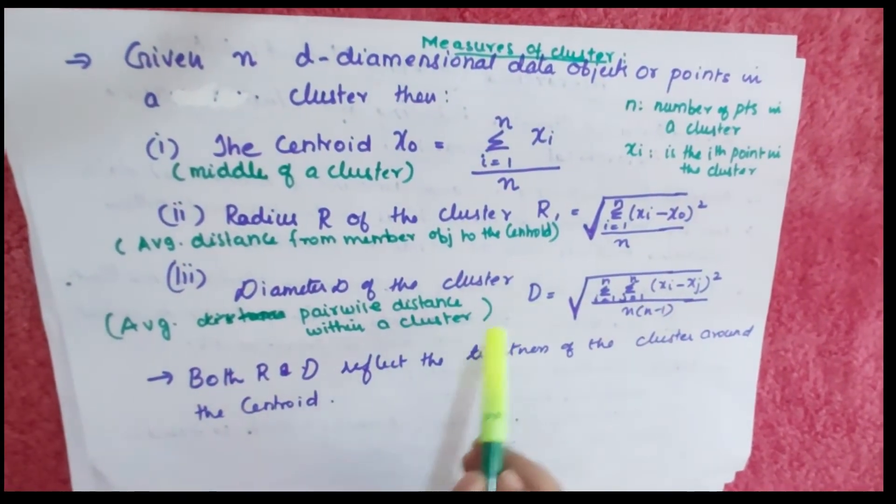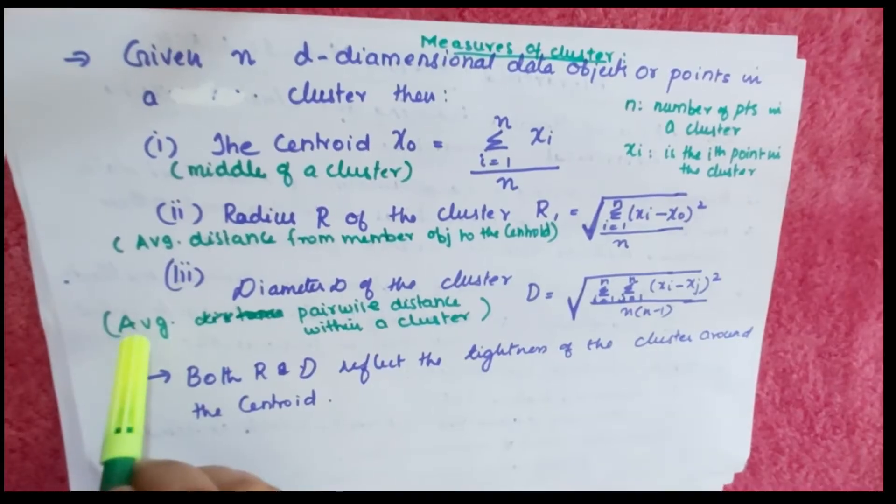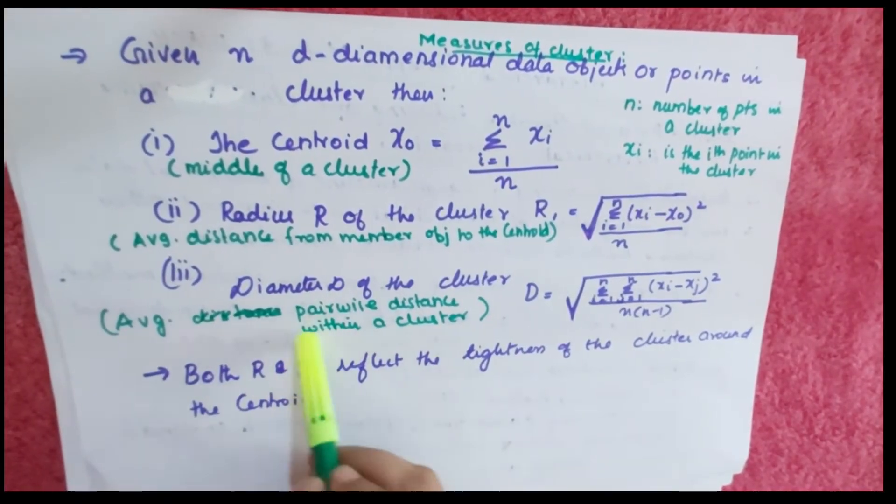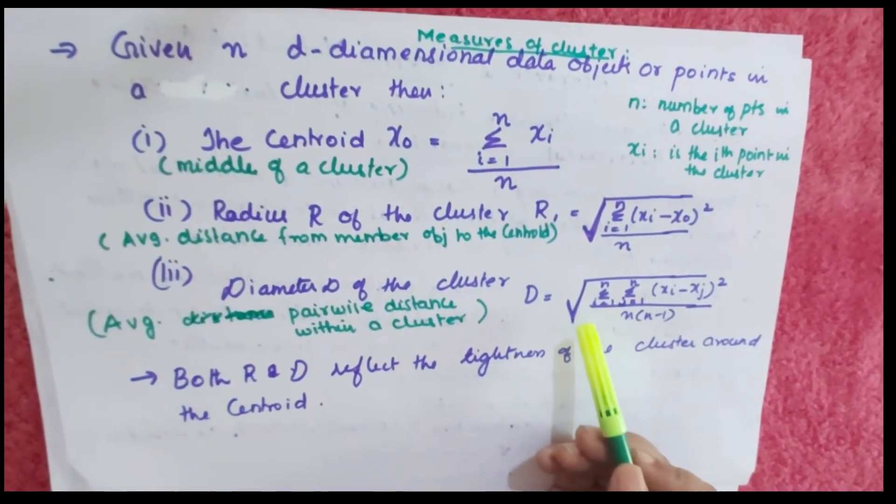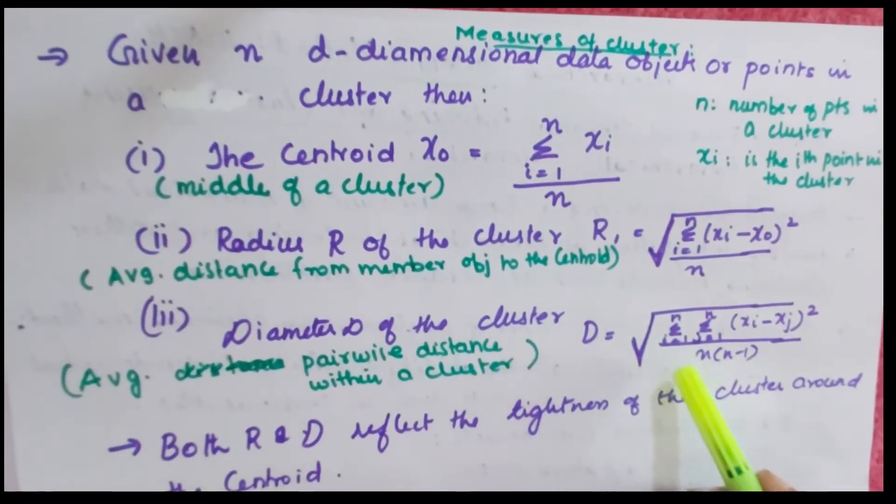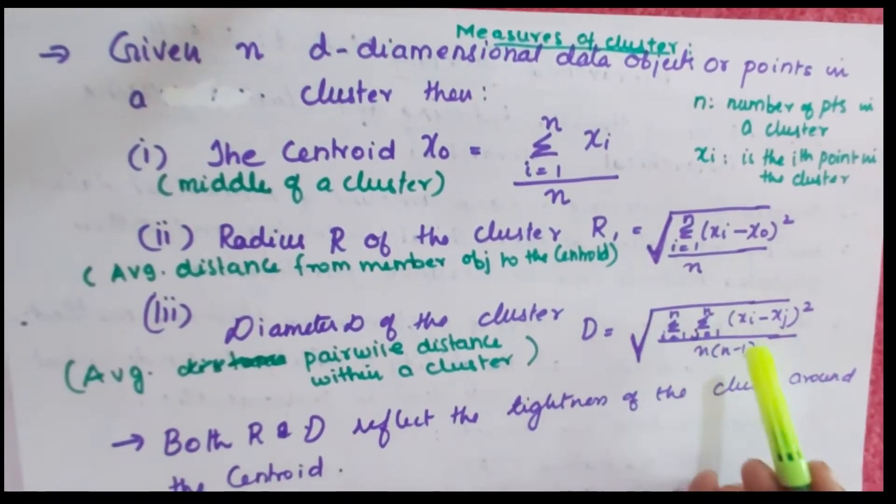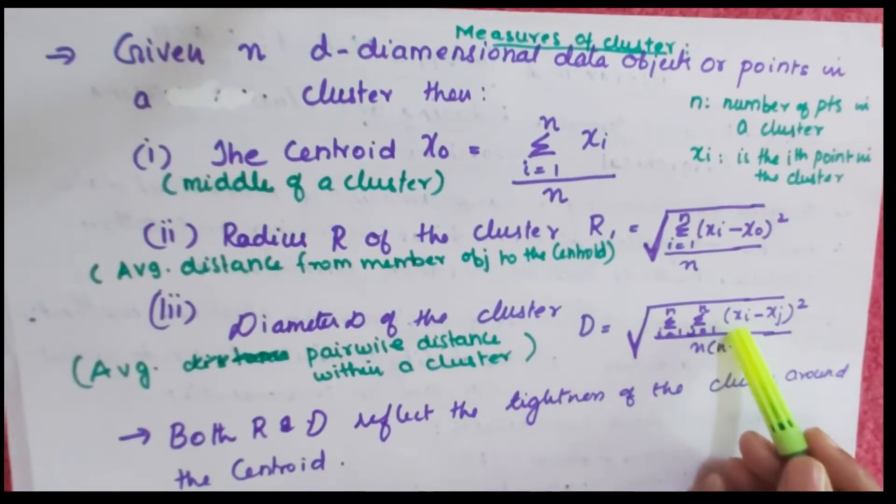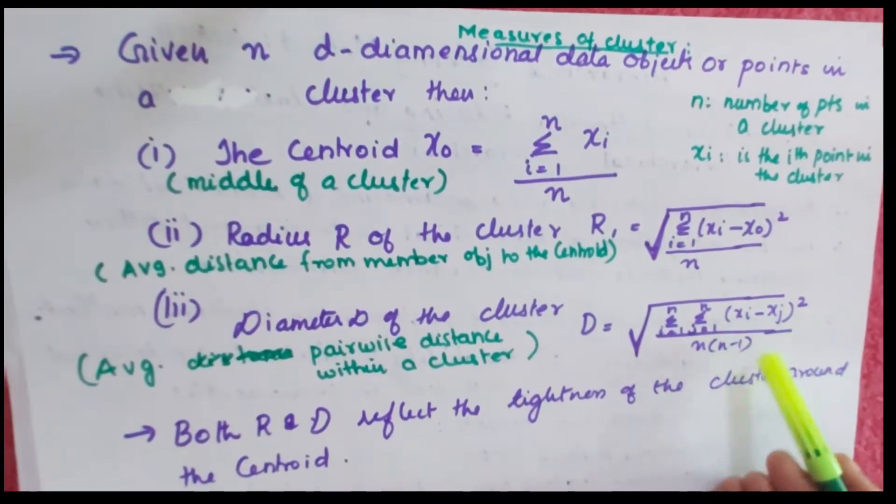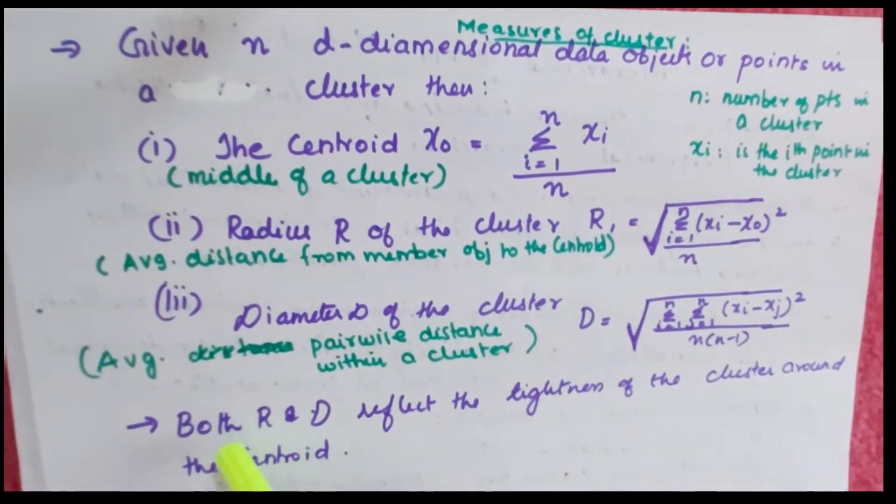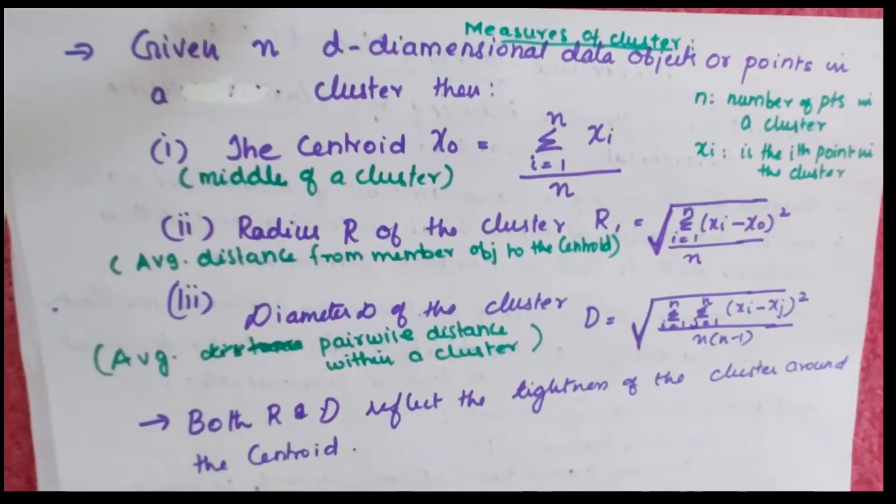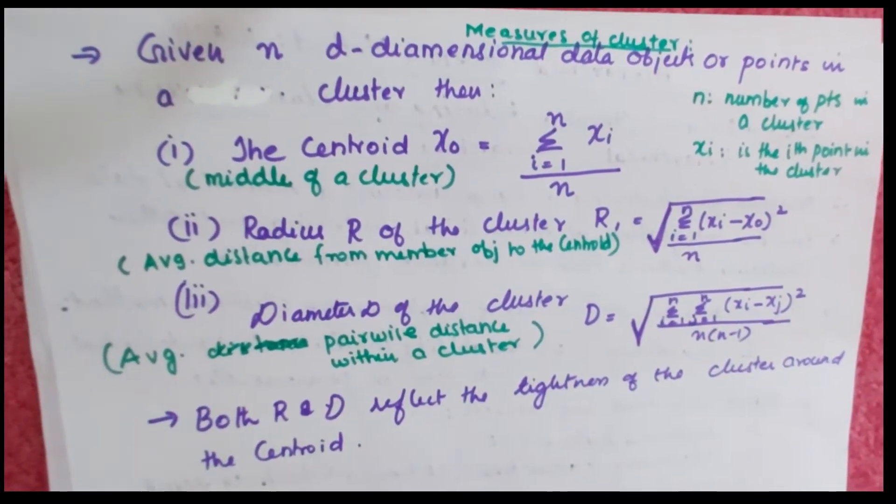Next is diameter of the cluster. Diameter is the average pairwise distance within the cluster and is denoted by D = √(Σ Σ (xi - xj)²/(n(n-1))), where i and j range from 1 to n. Both R and D reflect the tightness of a cluster around its centroid.